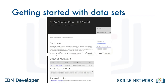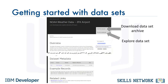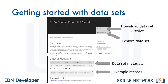Let's say you've found a dataset that might be of interest to you. On the dataset page, you can download the compressed dataset archive from cloud storage, explore the dataset using Jupyter Notebooks, review the dataset metadata such as format, licensing terms, and size, and preview some parts of the dataset.